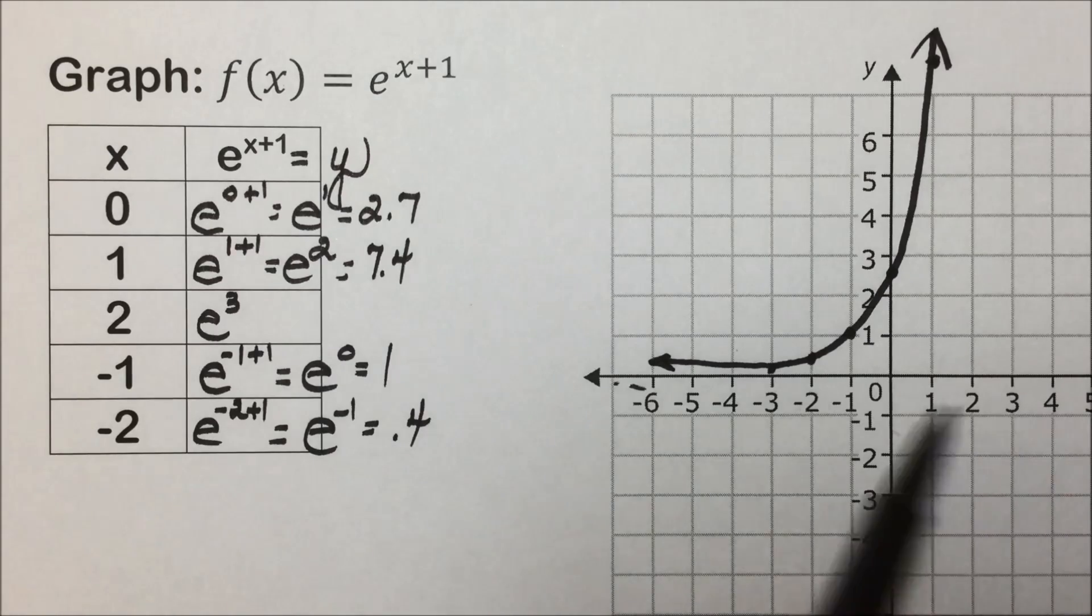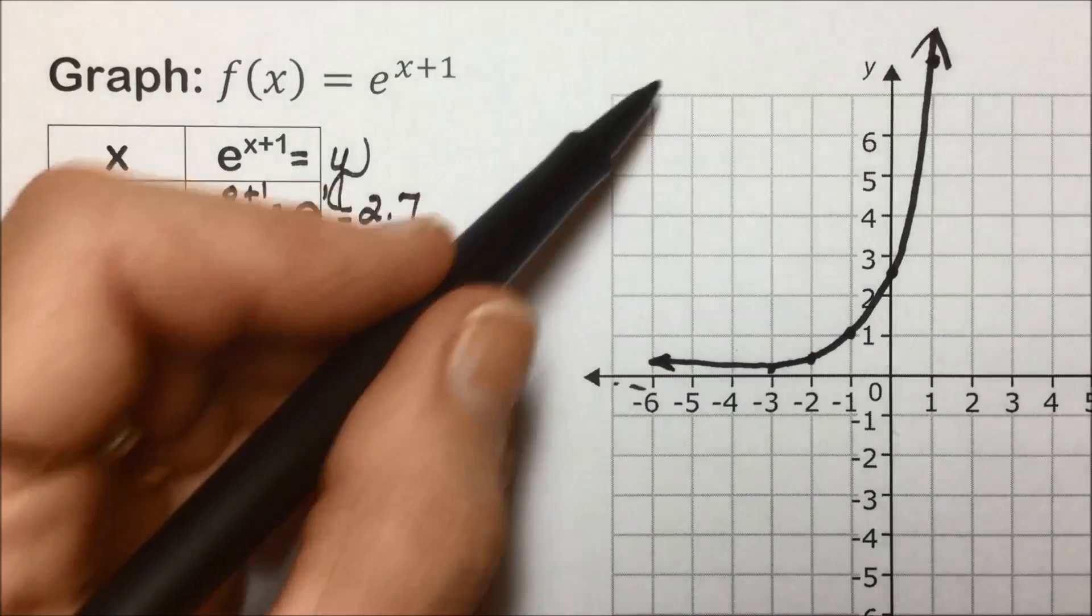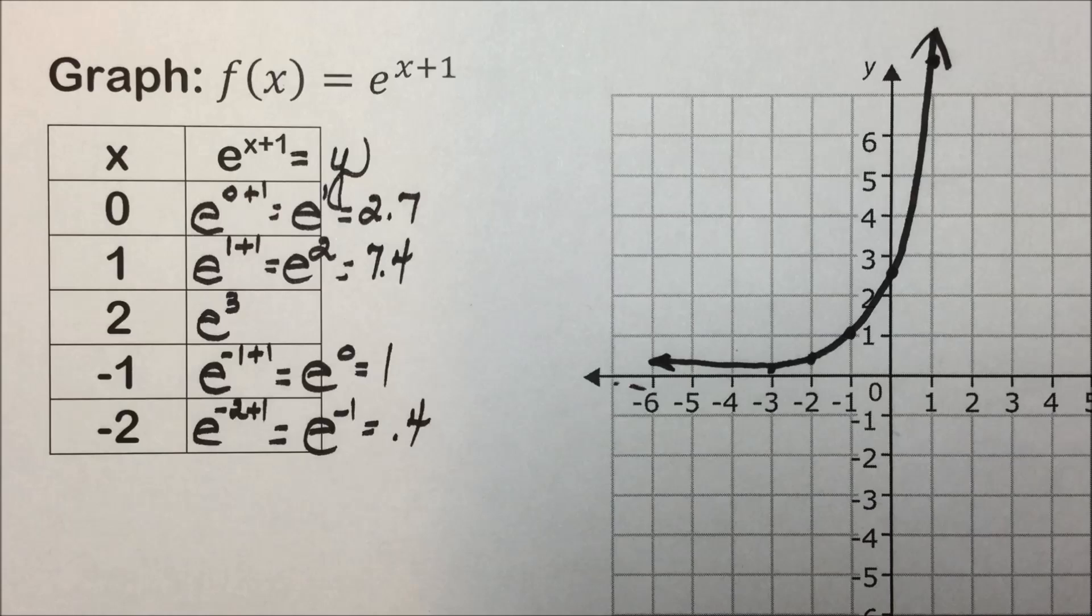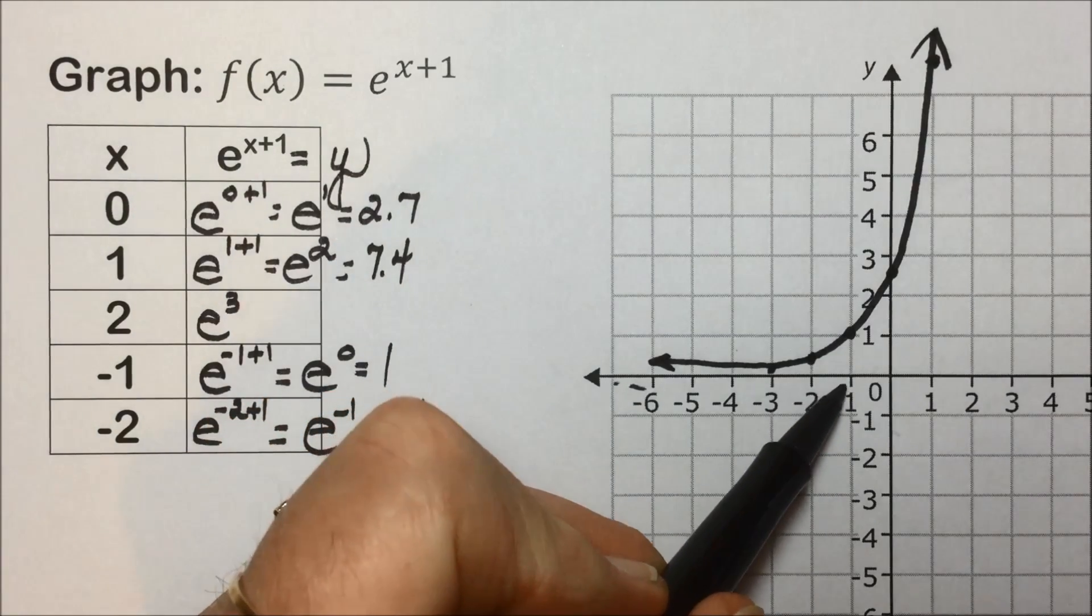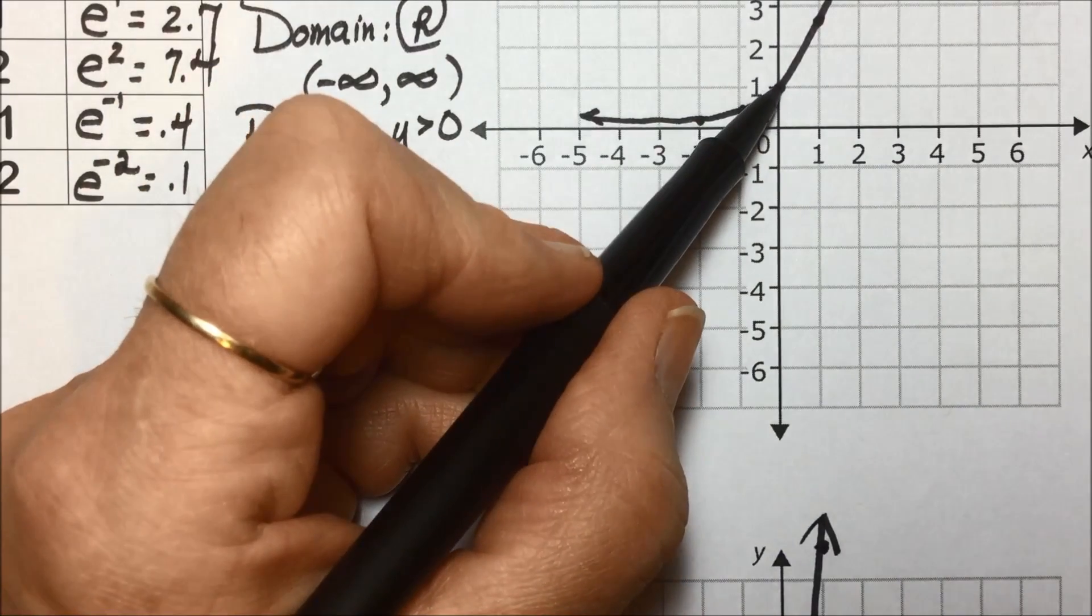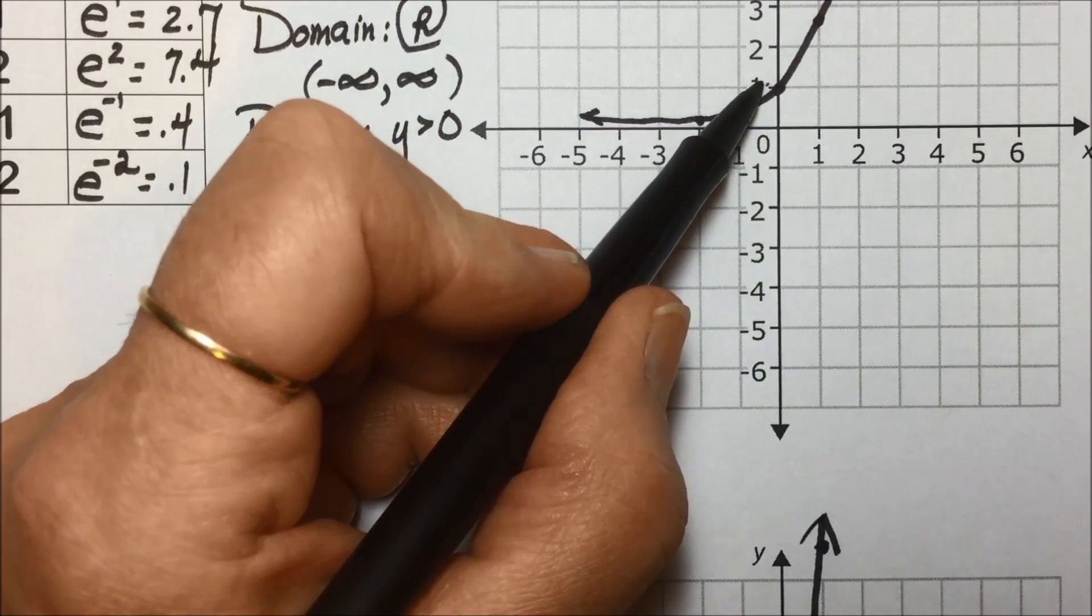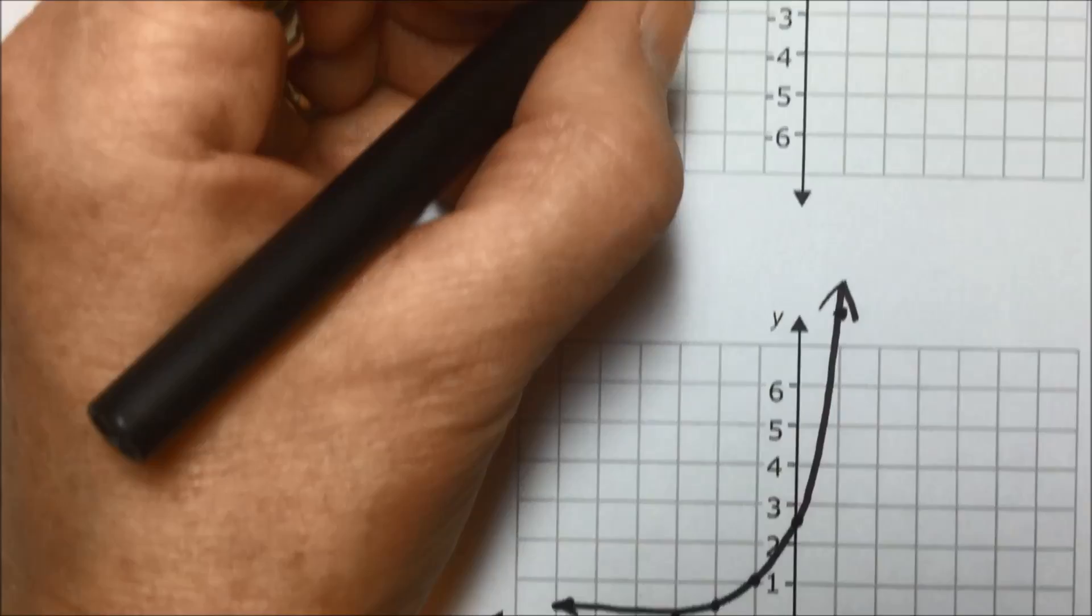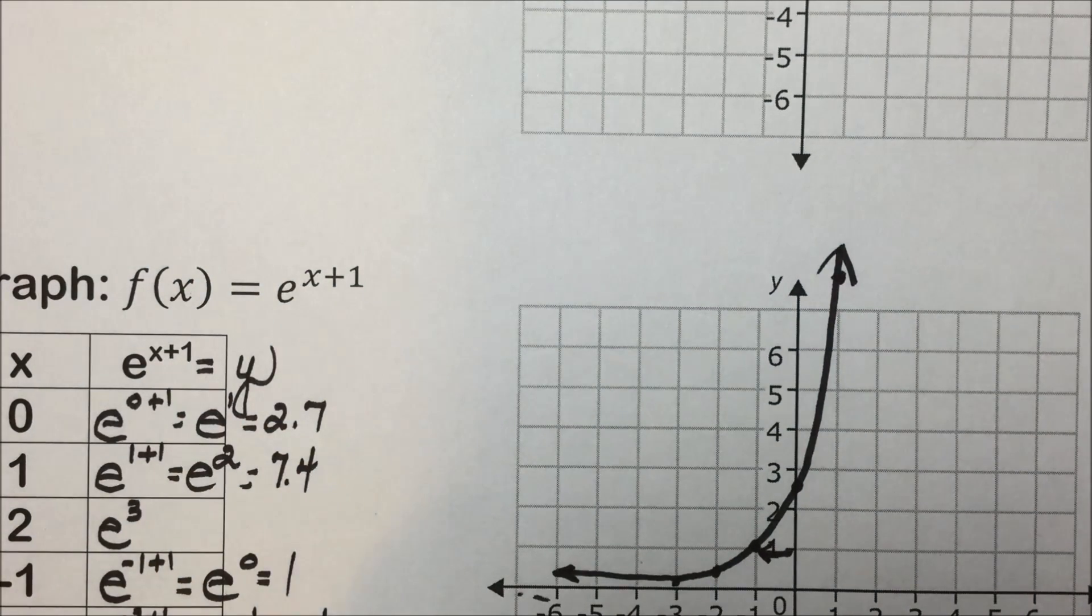The domain will be all real numbers, the range will be positive values. It's the same that we found for e to the x, but the difference is, if we look at this point, negative 1, 1 was at 0, 1. In this second graph, it is just shifted 1 to the left.